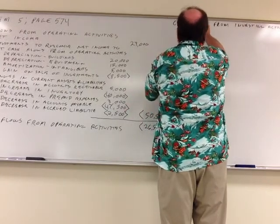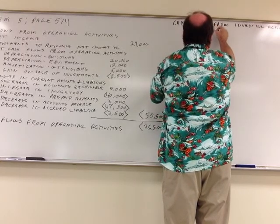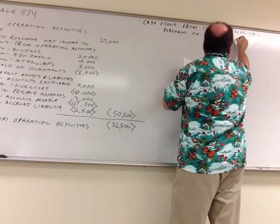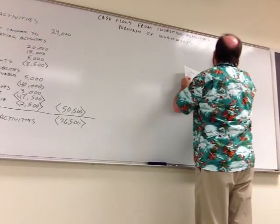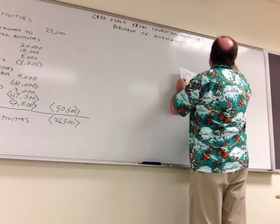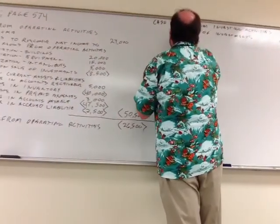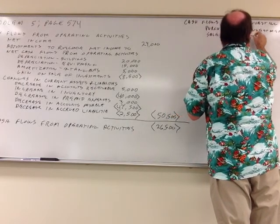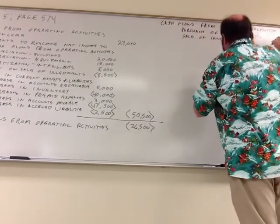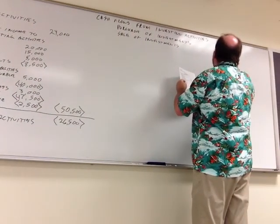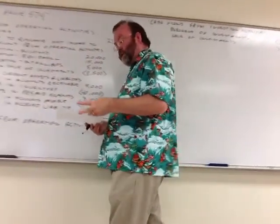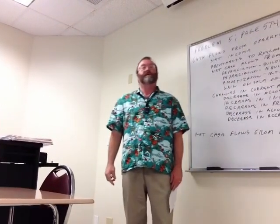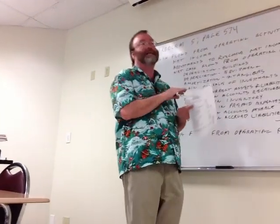So we've got two things going on here: purchase of investments for $29,000 — that's a use of cash, a negative — and then a sale of investments for $37,500, which is how much the investments were sold at. You could have figured that out with the balance sheet knowing the investment account did not change.